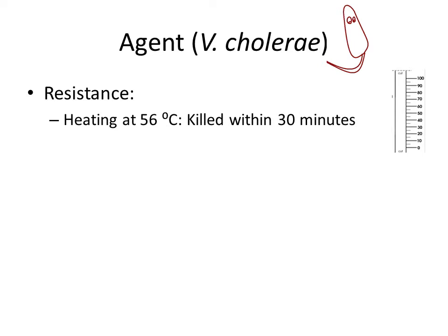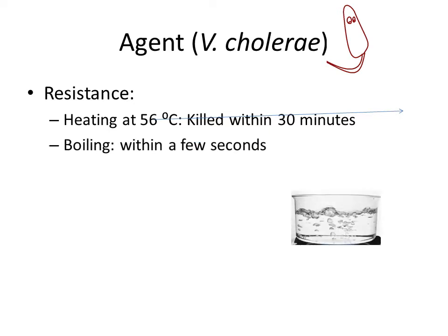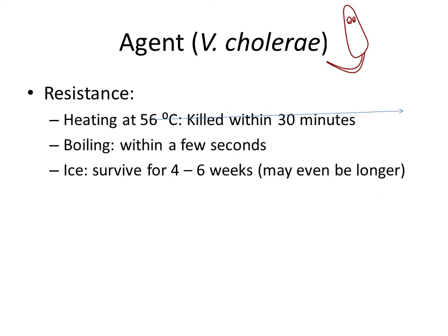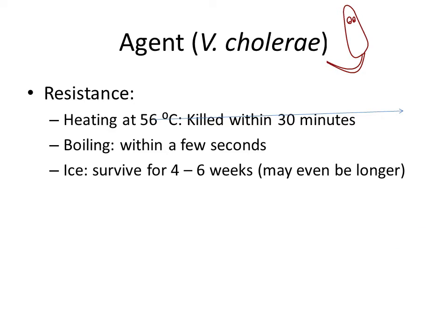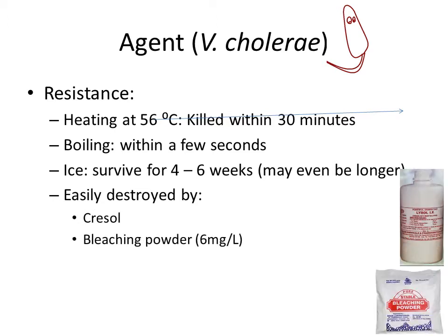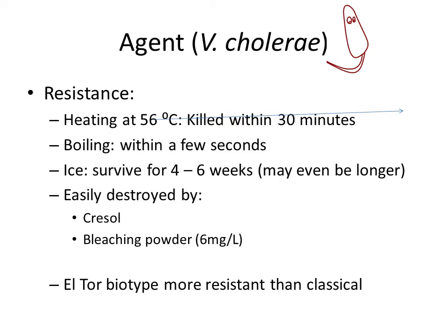Regarding resistance of the agent: Vibrio cholerae is killed in half an hour by heating at 56 degrees Celsius, and boiling kills it within a few seconds. It can survive in ice for as long as four to six weeks or longer. It is easily destroyed by disinfectants like cresol and bleaching powder. The ELTOR biotype is in general more resistant than the classical biotype.